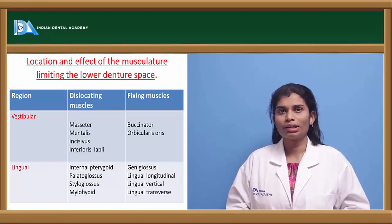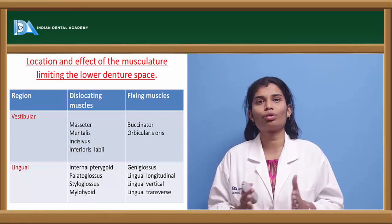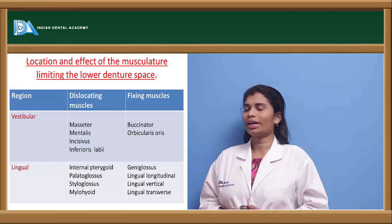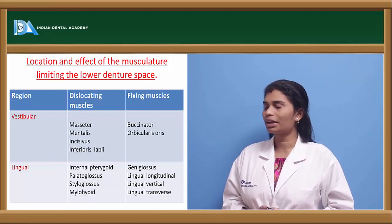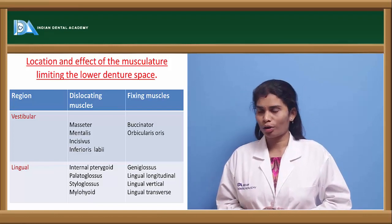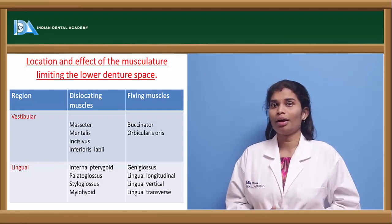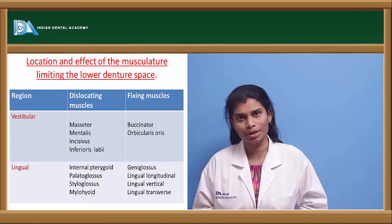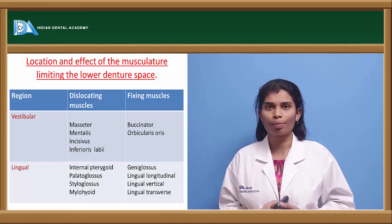Considering the lower denture, it is surrounded by dislocating muscles and fixing muscles. On the outer vestibular surface, the dislocating muscles are the masseter, mentalis, incisivus, and inferioris labii muscles, while the fixing muscles are the buccinator and orbicularis oris. On the lingual surface, the dislocating muscles are the internal pterygoid, mylohyoid, palatoglossus, and styloglossus. The fixing muscles on the lingual side are the genioglossus and the transverse, vertical, and longitudinal groups of tongue muscles. The inclined and polished surfaces should be in harmony with these muscles for proper denture stability.